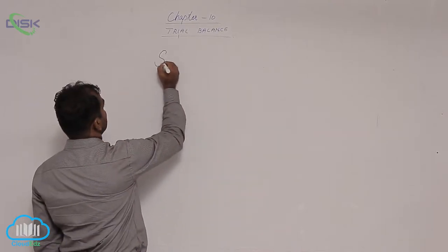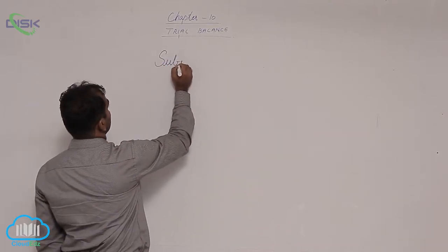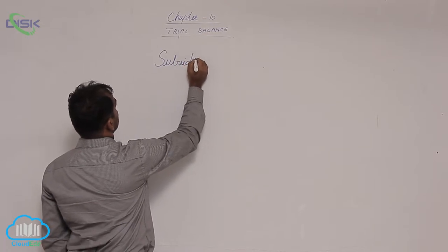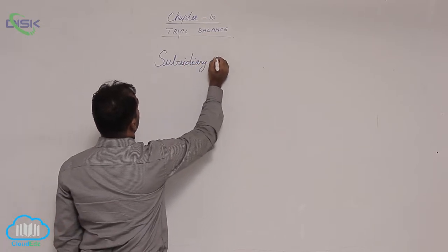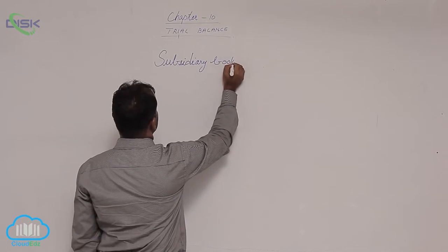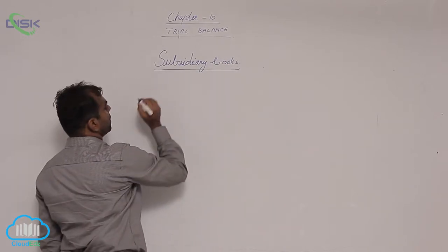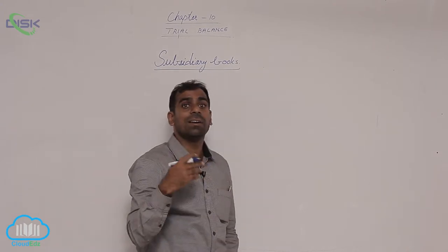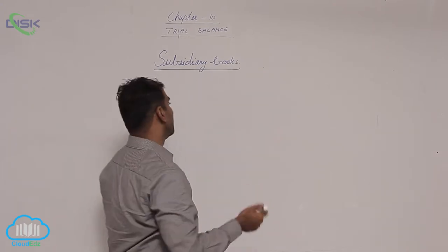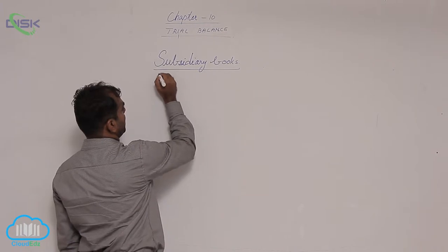Let us see, based on subsidiary books, how we can remember balances shown by some accounts. For instance, cash book we already discussed initially. Now I am seeing the other subsidiary books.